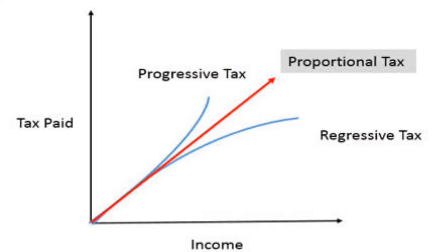This illustration shows the categorization of taxes according to the tax rate and base structure. On the x-axis we have income, and on the y-axis we have the tax paid. We can see the progressive tax increasing — the tax paid increases as income increases.